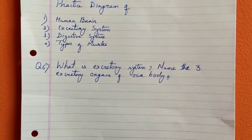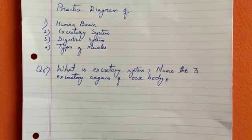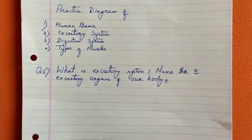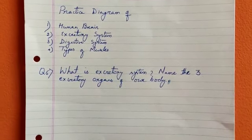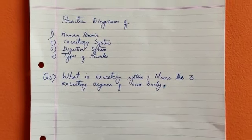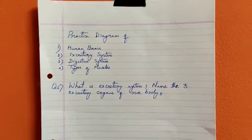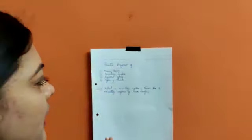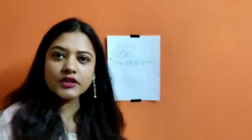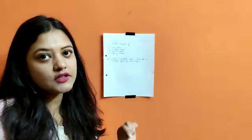The questions are: What is the excretory system? Name the three excretory organs of our body. Along with those question answers, practice the diagrams as well. This is also important — please read the whole chapter thoroughly and find out the answers.